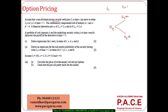The continuously compounded rate of interest is r, and u is greater than e power r, which is greater than d. A financial derivative pays alpha if the stock price goes to St·u and beta if it goes to St·d. There is an alpha payout and a beta payout. A portfolio consists of cash amount x and an underlying security with value y at time t.